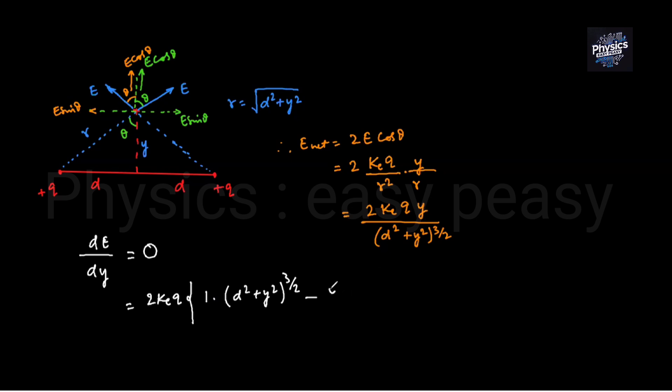numerator y, denominator differentiated 3/2 times d squared plus y squared to the power 1/2 times 2y. Whole divided by denominator squared, d squared plus y squared cubed. We set this equal to zero.